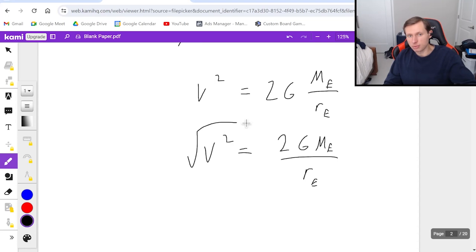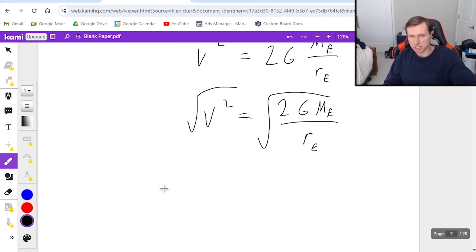And then if I want to solve for v, then I just take the square root of this. So the escape velocity of the Earth is equal to 2 times the universal gravitation constant times the mass of the Earth divided by the radius of the Earth.